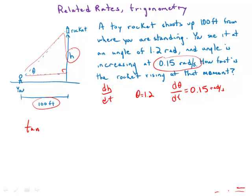Tangent of θ equals opposite over adjacent, which equals h over 100. I'll just multiply by 100 to simplify things. Now I have an equation relating θ to h.